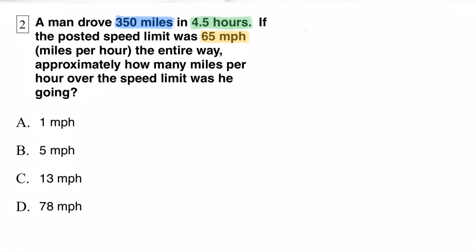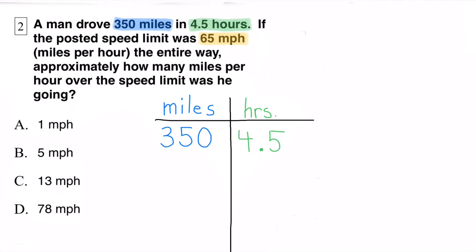A man drove 350 miles in 4.5 hours. If the posted speed limit was 65 miles per hour the entire way, approximately how many miles per hour over the speed limit was he going? Well, he drove 350 miles in 4.5 hours, so I made a chart with miles on the left side, 350 miles, and hours on the right hand side, 4.5 hours.